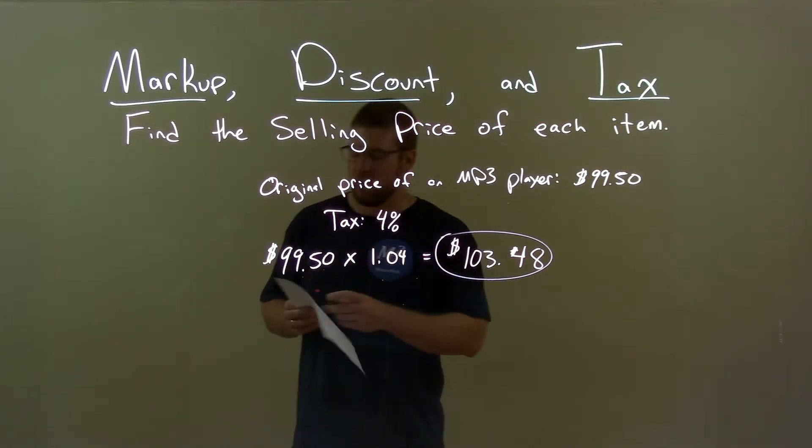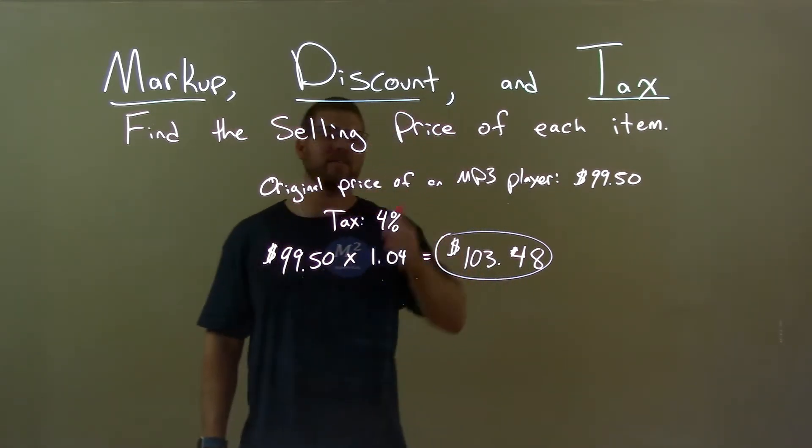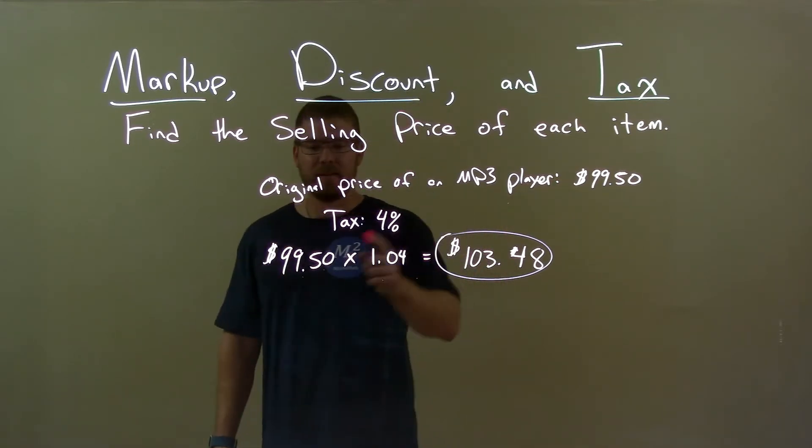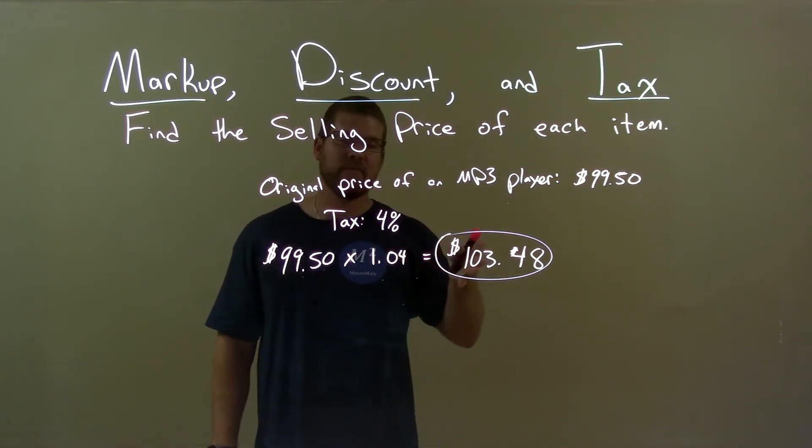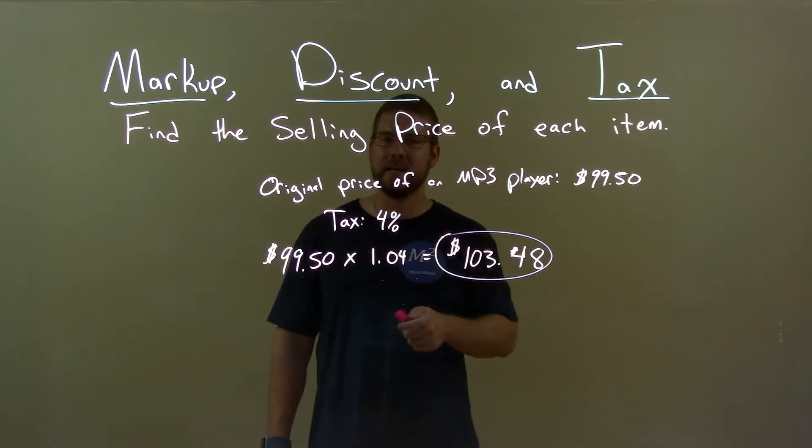So quick recap, we're given the original price of an MP3 player which is $99.50, and we have a tax of 4%. We got to find the selling price. Well, we take the 99.50, times it by 1.04, and get a final answer after taxes of $103.48.